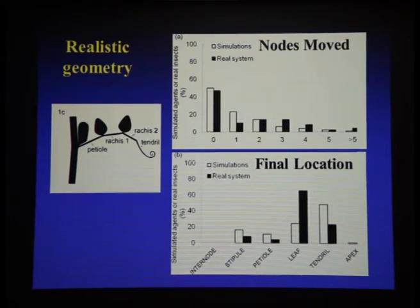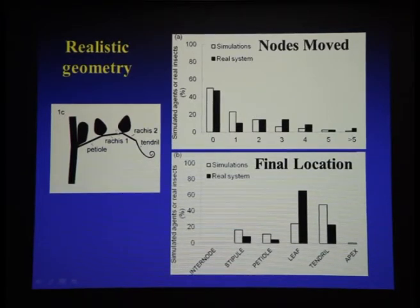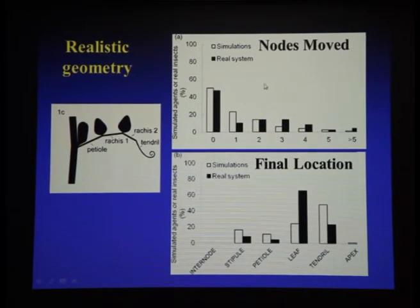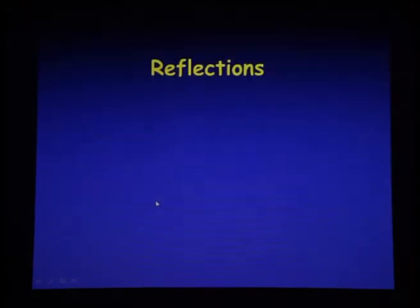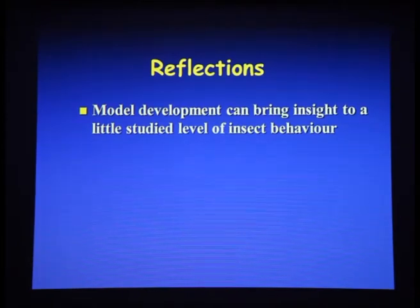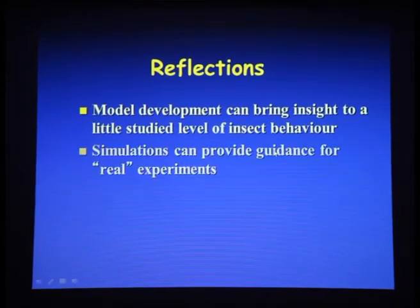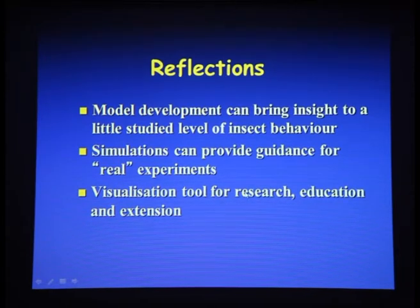We looked at a more realistic geometry so that once insects get out towards the tendril, the angle information tells them 'up is that way, I should go back.' Looking at the plant, this is in fact what happens. With this improved geometry, nodes moved again were reasonable, and final locations came back somewhat — but not all the way. We're still working on that part of the model. Overall, model development gave us insight — it made us look more carefully at the plant structure than we would have otherwise — and gave us guidance for real experiments. With these tools you can test different hypotheses and use them in education and extension.